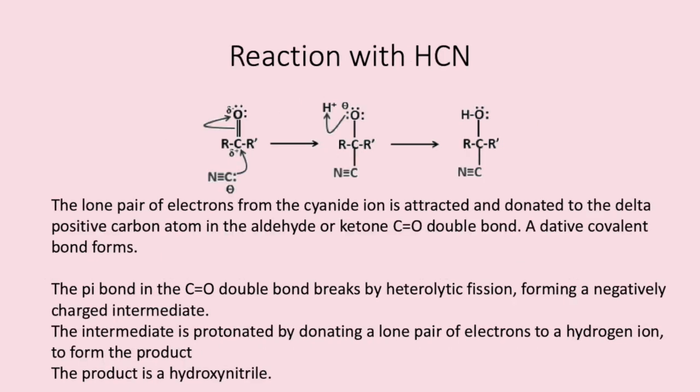The other reaction is one with a hydrogen cyanide molecule. The lone pair of electrons from the cyanide ion is attracted and donated to the delta-positive carbon atom in the aldehyde or ketone, and a dative covalent bond forms. The pi bond in the C=O breaks by heterolytic fission, forming a negatively charged intermediate. The intermediate is then protonated by donating a lone pair of electrons to a hydrogen ion to form the product — a hydroxynitrile. A key word here is 'protonated', which simply means to gain a proton or a hydrogen ion. Again, you need to get familiar with this reaction.